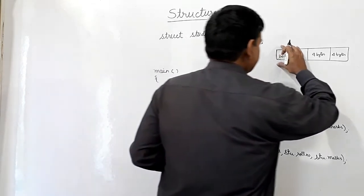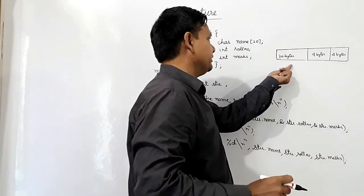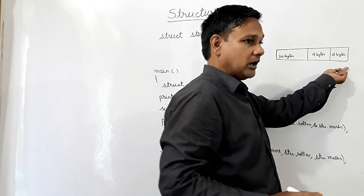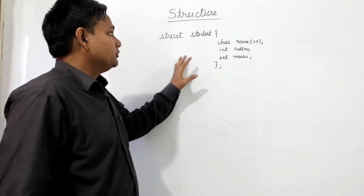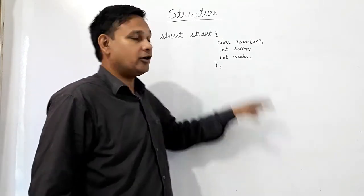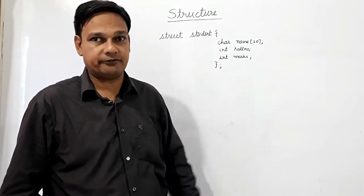And in memory, this memory will be allocated here in this way only. Here name will be - it's for name, then for role number, then for marks. If I want to store values, I want to store the data of some students. Students may be 20 or 50.